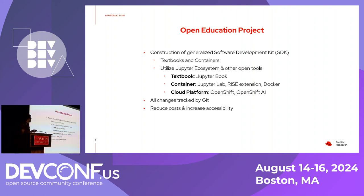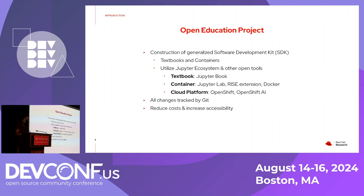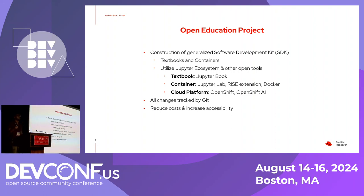The open education project also reduces cost and increases accessibility for learners. It reduces cost because students don't need to pay hundreds of dollars for a proprietary textbook — their textbook is open source and free. It also increases accessibility because all students need is access to a web browser. They don't need a computer or laptop with a lot of compute power. You can even use something like a Chromebook to access the container environment and use the compute power from the data center it's running on, rather than your local laptop.